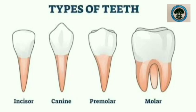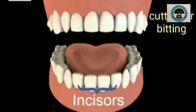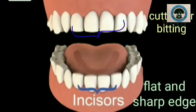The first one is incisors. Incisors are used for cutting or biting food. They are the front four teeth in the upper and lower jaw in our mouth. They are flat and have a sharp edge.